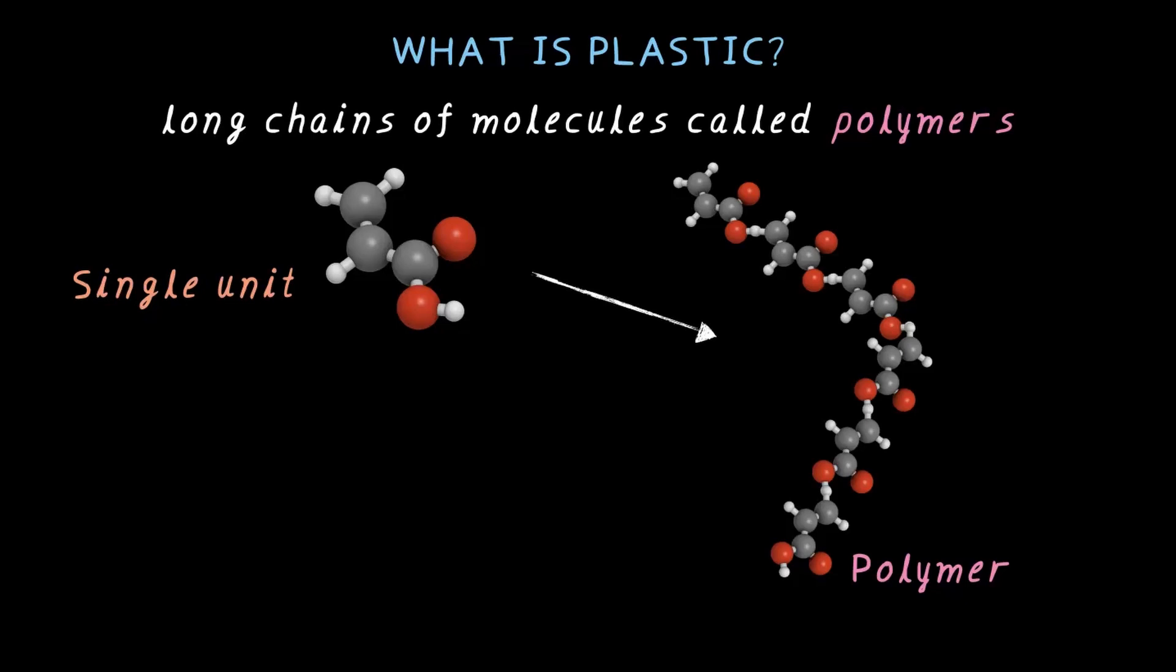Now, here's the cool part. Depending on how these tiny bricks are arranged, plastic can be soft and flexible like a shopping bag, or rock hard like your motorcycle helmet. But here's the thing: not all plastics are the same. There are different types of plastics.